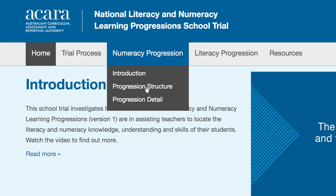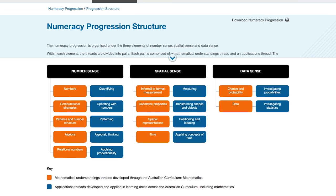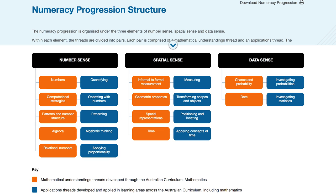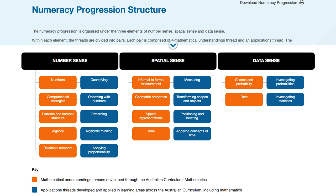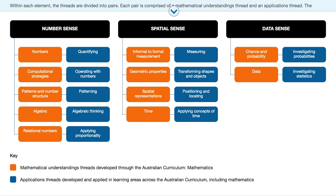The numeracy progression is organised under the three elements of number sense, spatial sense and data sense. Under each of the elements there are threads, which represent big ideas or important numeracy concepts. The choice of these threads and their titles is derived from evidence and has been the subject of much consultation and debate with both practitioners and experts. The threads are presented in pairs.